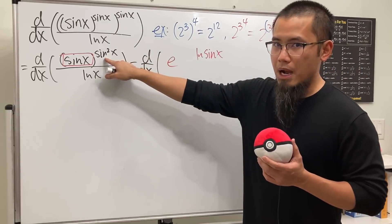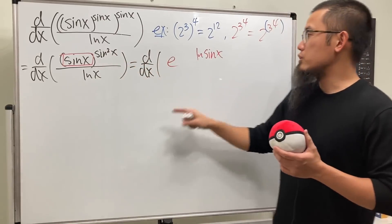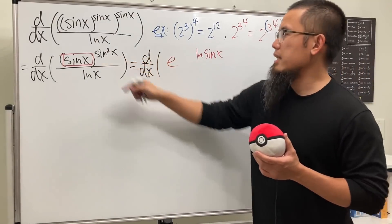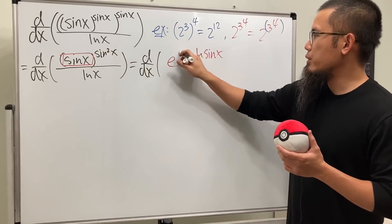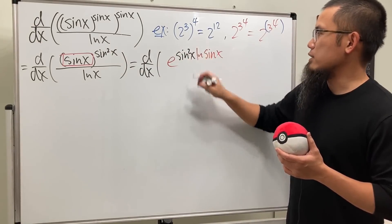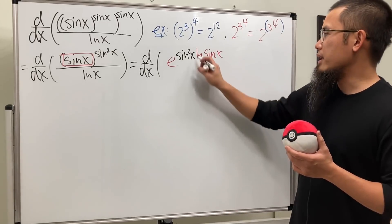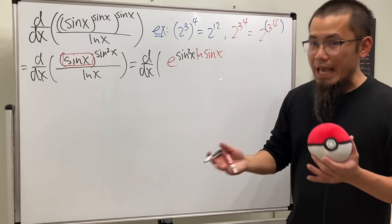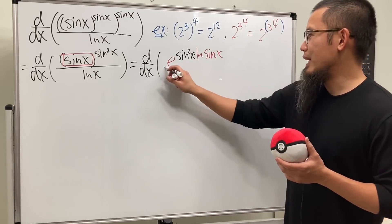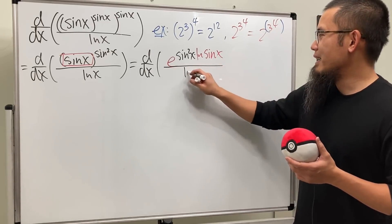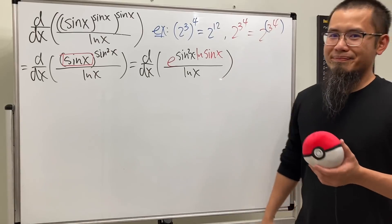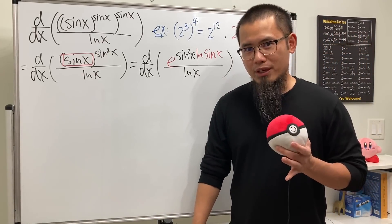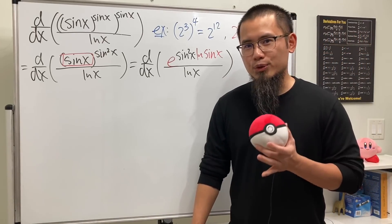We still have this raised to the sin²(x) power, so we multiply the exponents: sin²(x) times ln(sin(x)) becomes the new exponent. And of course we still have to divide by ln(x). Now let me show you the biggest quotient rule question you'll see.